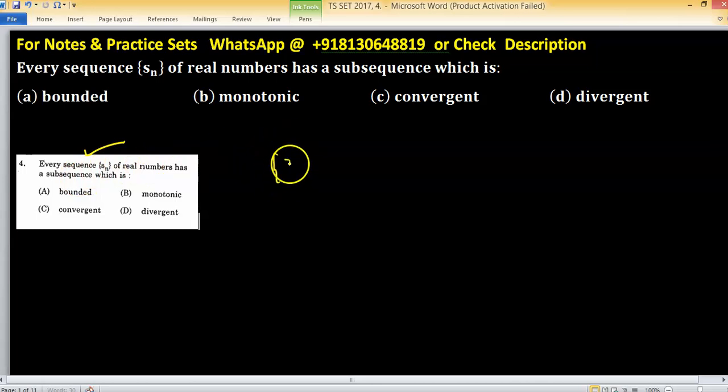If a sequence Sn of real numbers is given with no condition for boundedness, then each option becomes true. How?